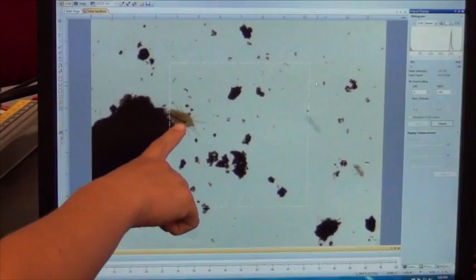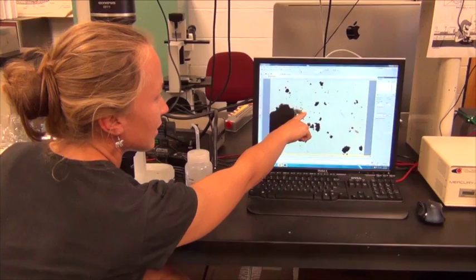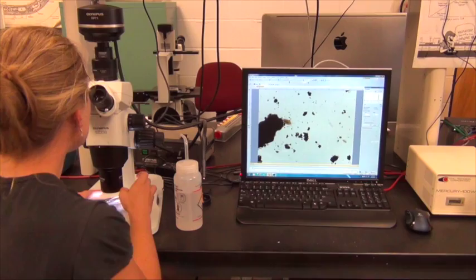Here is the mesostigmatid mite, right here. You can tell that it's a mite. Mites are closely related to spiders and things like that. They have eight legs, so you can count the legs here as eight or four pairs of legs.